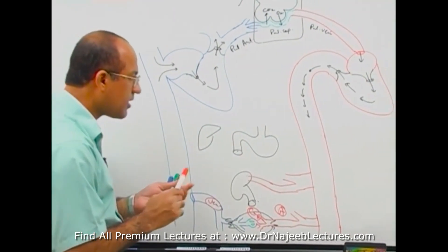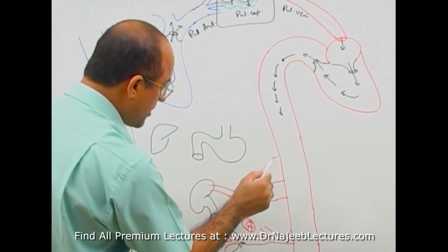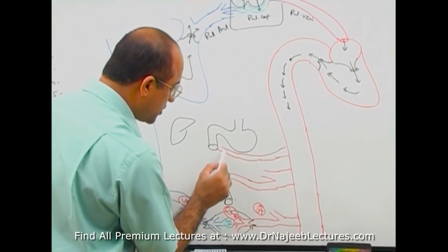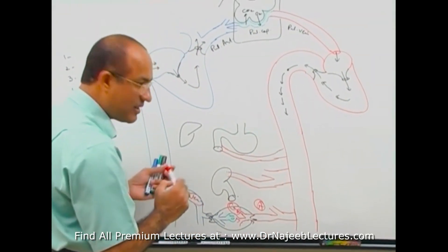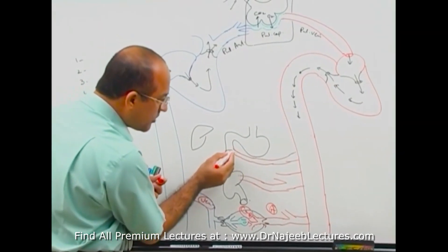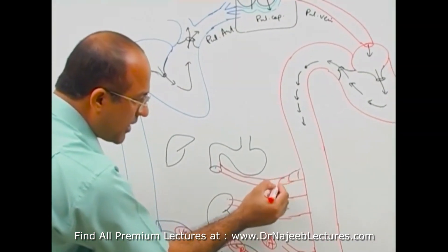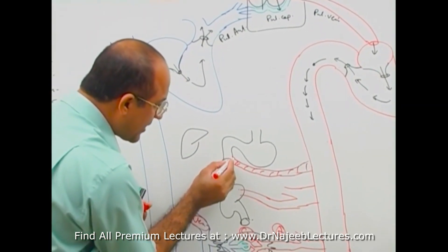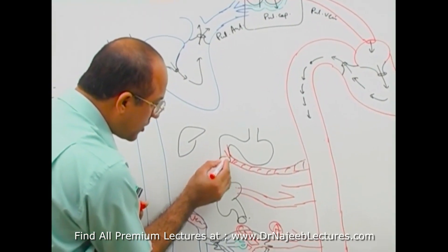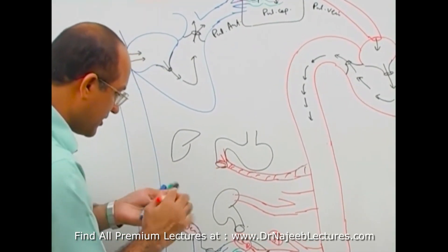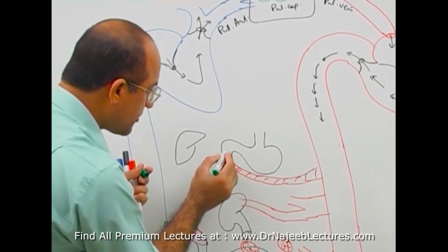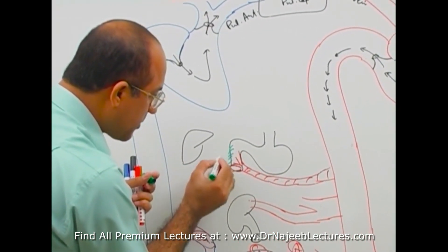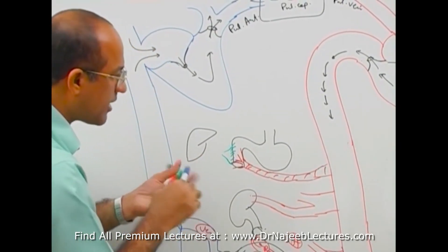For example, from the aorta, via the arterial system, blood is brought to the GIT. When blood comes to the GIT, this arterial blood enters the GIT lining and breaks down into smaller capillaries. These capillaries then unite together and form a vein.